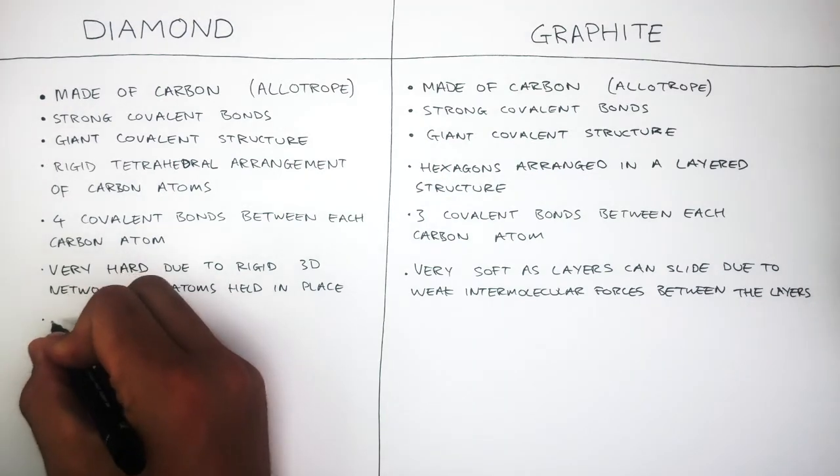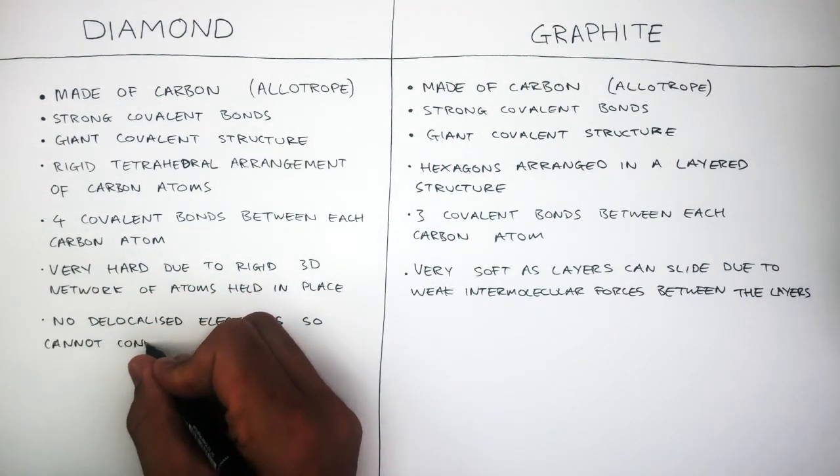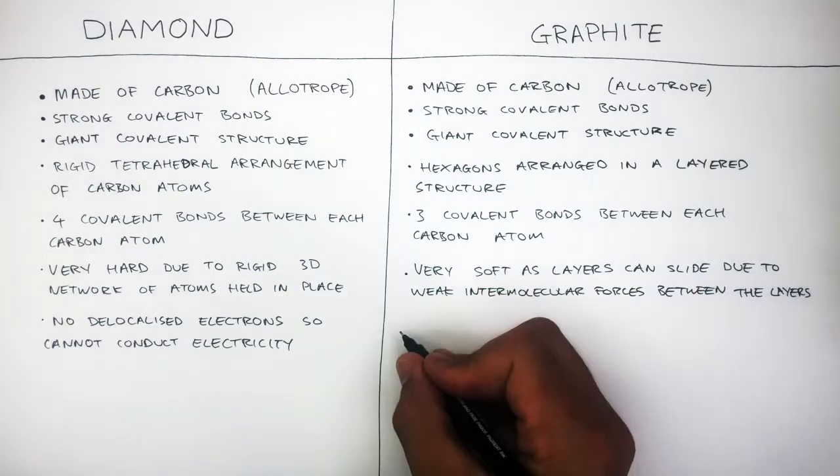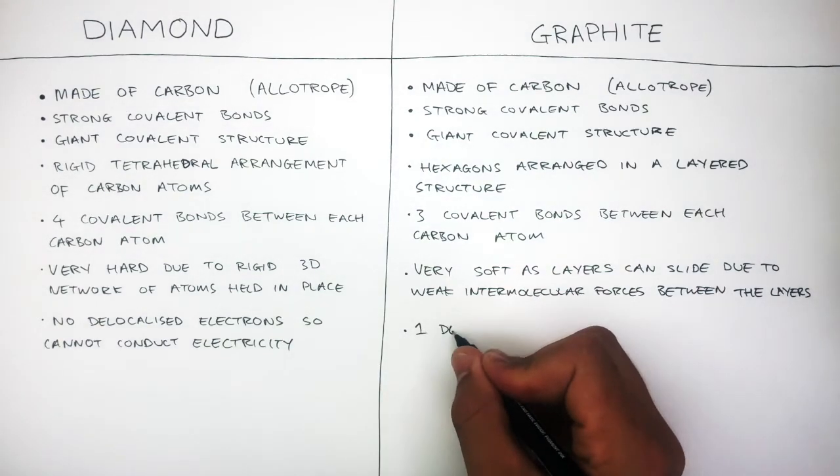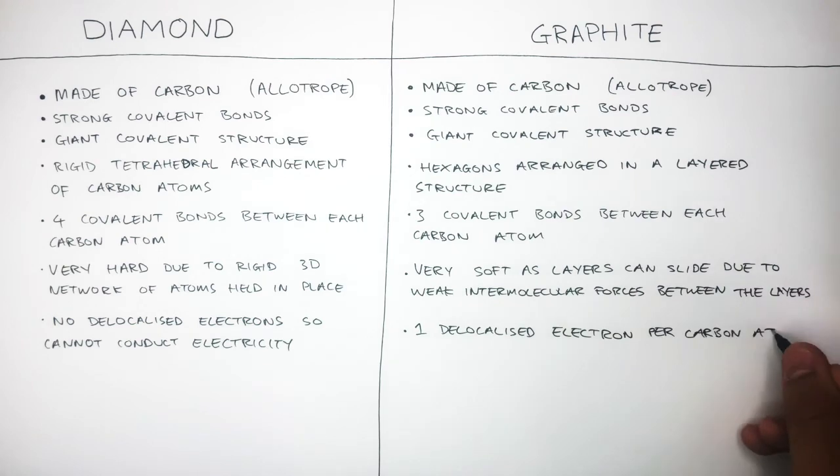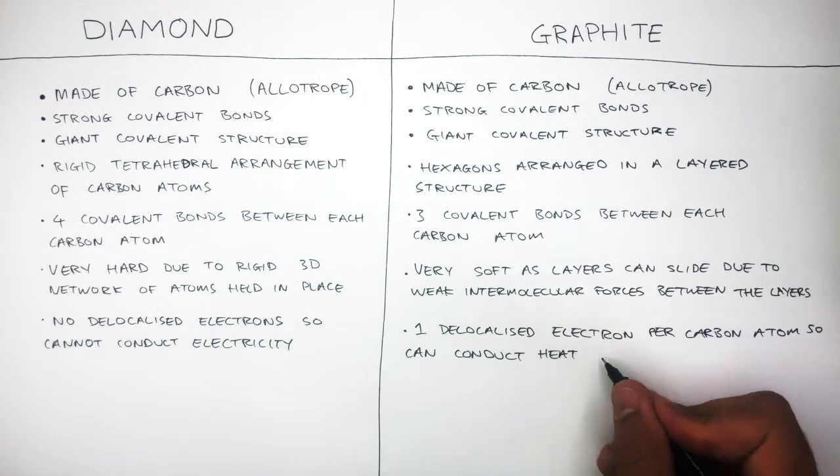Diamond has no delocalized electrons so cannot conduct electricity. Whereas graphite has one delocalized electron per carbon atom so can conduct heat and electricity.